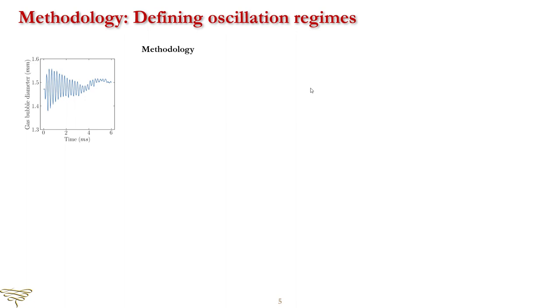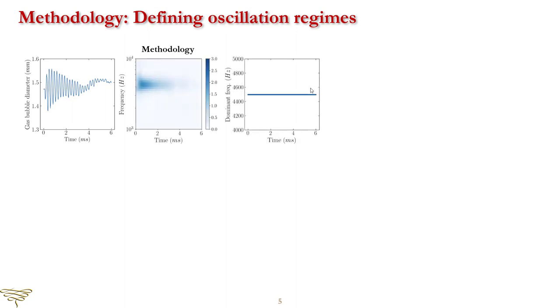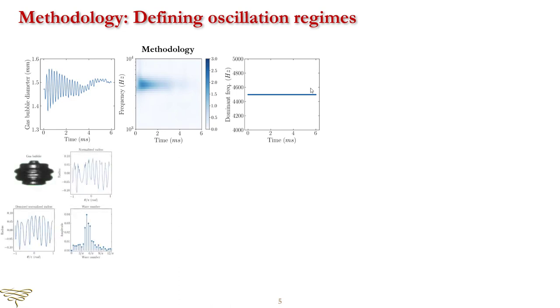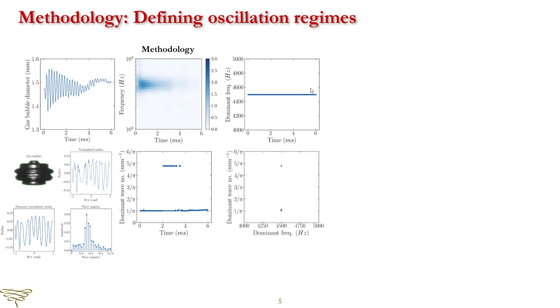Currently, there is no single approach that can define different oscillation regimes autonomously. Here, we propose a frequency-based approach to define different oscillation regimes. In this approach, the air bubble volume variation over time signal obtained from high-speed imaging is analyzed with a continuous wavelet transform to find the dominant frequency of size variations over time. Next, the air bubble boundary at each time instant is transformed into r-theta coordinates, the obtained signal is denoised, and the dominant wave number is determined. Hence, the time history of the dominant wave number of the air bubble boundary is obtained. Lastly, the air bubble oscillation modes are achieved by plotting the time history of the bubble boundary wave number against the dominant frequency of size variations over time.